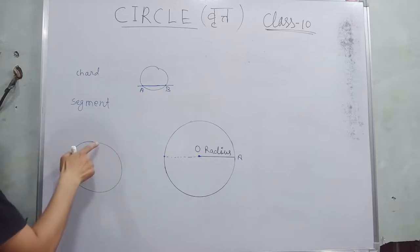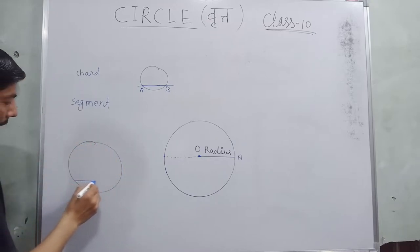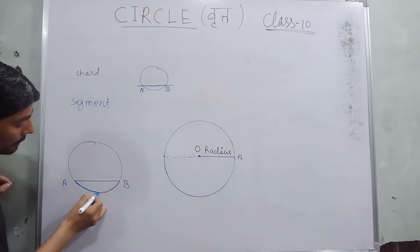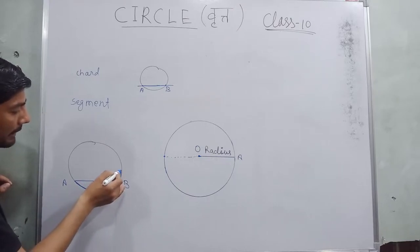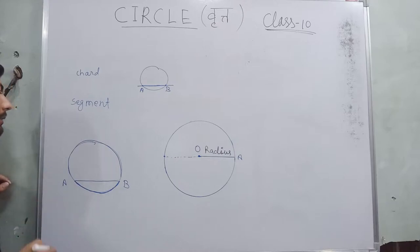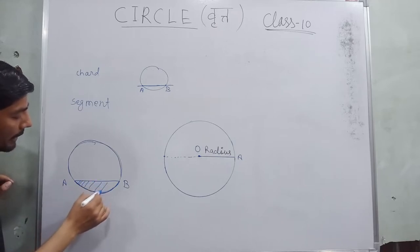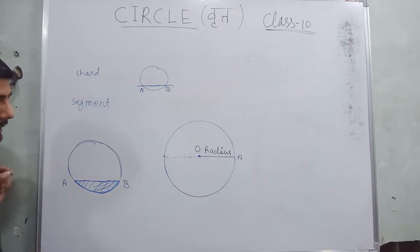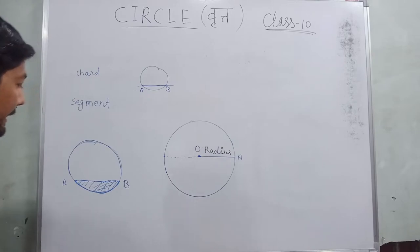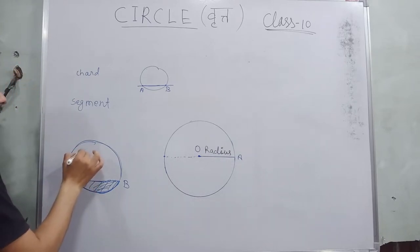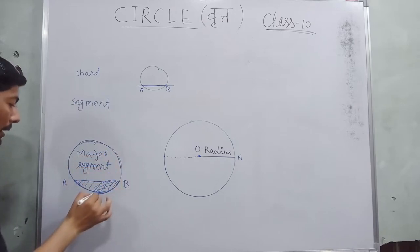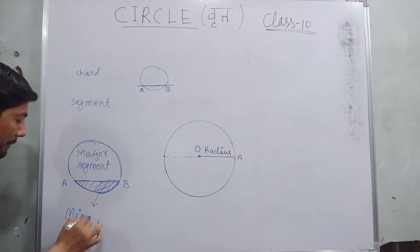Now let's talk about segment. Let us suppose we draw a circle and we draw a chord AB. This chord AB divides the circle into two arcs — one is the smaller arc and the second one is the greater arc. So the region between a chord and its corresponding arc is called a segment. The area between a chord and its respective arc is called segment. There are two types: the bigger one is called the major segment and the smaller one is called the minor segment.